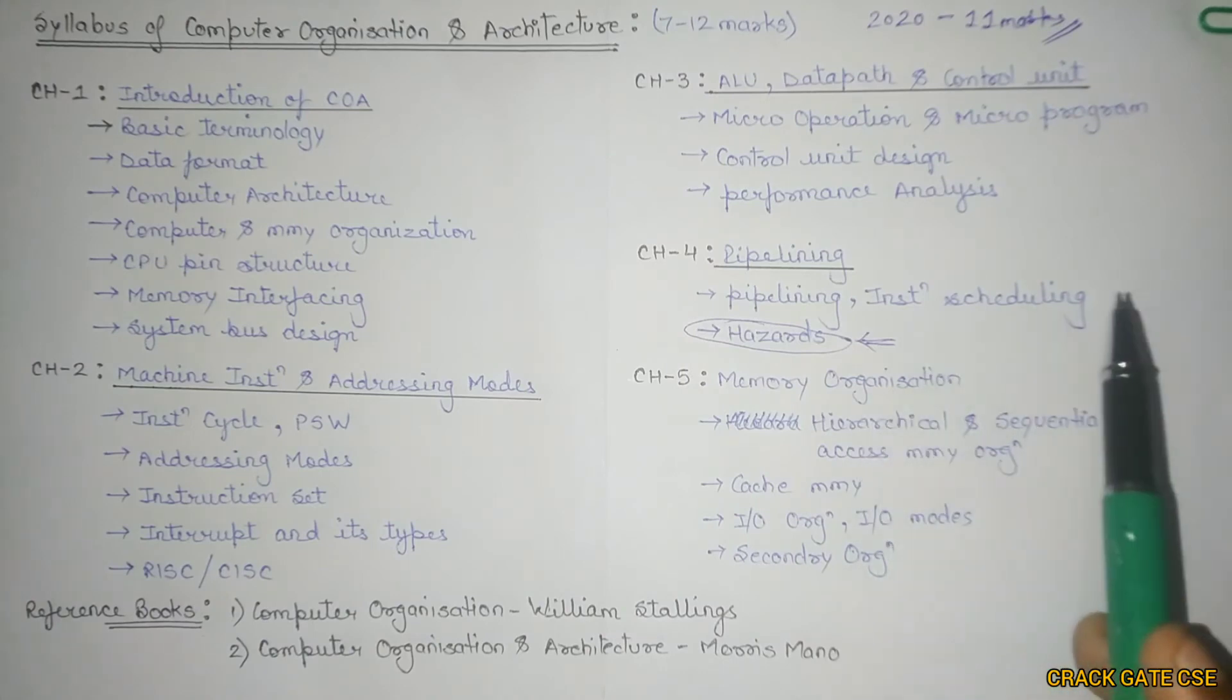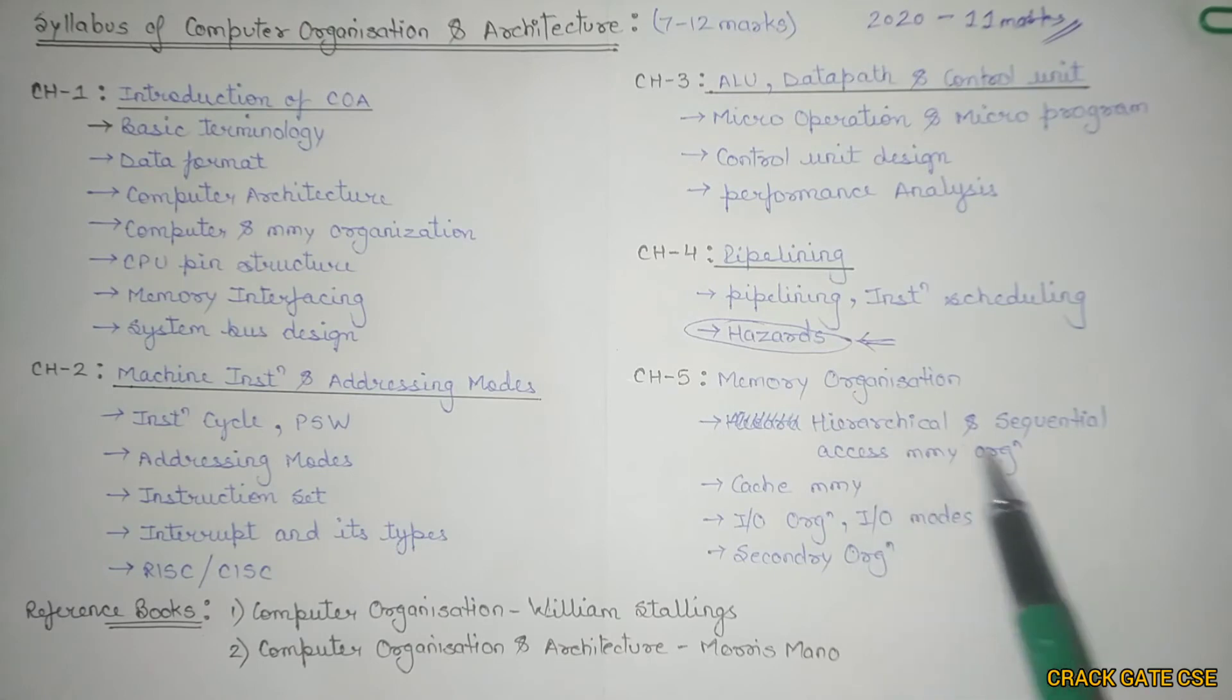After pipelining, we'll move on to memory organization. We'll start from hierarchical and sequential access memory organization, followed with cache memory, I/O organization, I/O modes like what is programmed I/O, interrupt driven I/O, and DMA. Then we'll move on to secondary organization. In secondary organization, we'll understand what is hard disk and how the hard disk actually works.